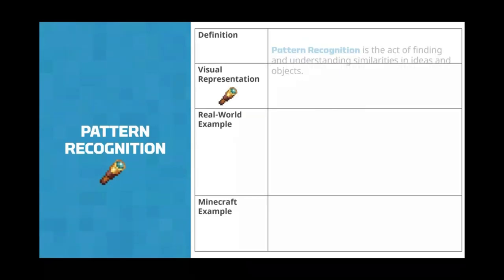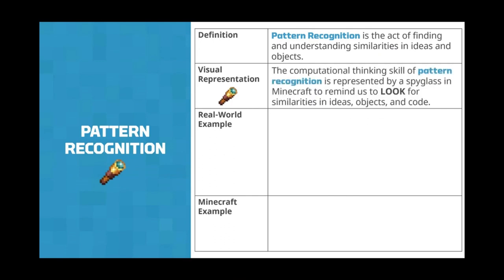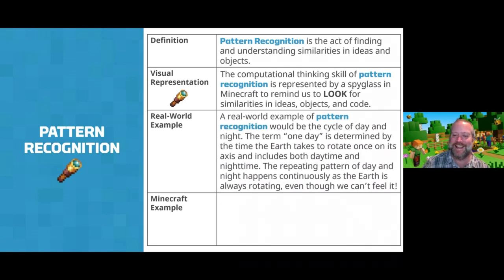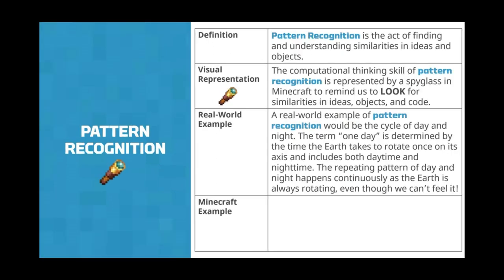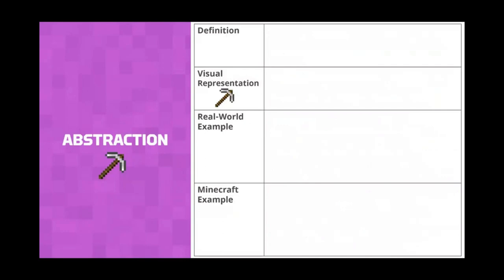Pattern recognition is about finding similarities in ideas and objects — we're using the spyglass for this one. Think about the cycle of day and night: the earth is continually rotating, creating a repeating pattern. In Minecraft, exploding creepers are a great example — we know they're going to explode because they start flashing. We can recognize that pattern and know to get away from them. That's recognizing patterns and using them to inform future choices.